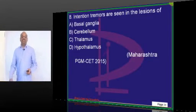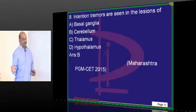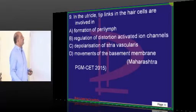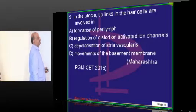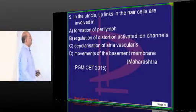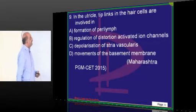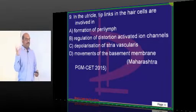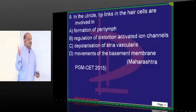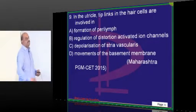Intention tremor is typically seen in lesions of the cerebellum — that is what you have to fundamentally understand. In the utricle, the tip of the hair cells are important. Whenever we listen to sound, we appreciate the intensity, pitch, amplitude, timbre, and many individual acoustic qualities of the sound.